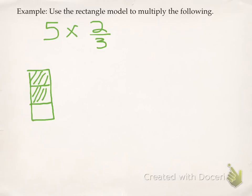The second example, we're going to use a rectangle model to multiply the following. So this time, we're going to do 5 times 2 thirds. So when I use a rectangle model, I need to use the rectangle to represent the fraction. So in this case, our fraction is 2 thirds, so I'm going to draw a rectangle. The denominator is a 3. That means it needs to have 3 parts. And the numerator tells me that we're going to count 2 of them. So I'm going to shade in 2 parts, and that's my 2 thirds.